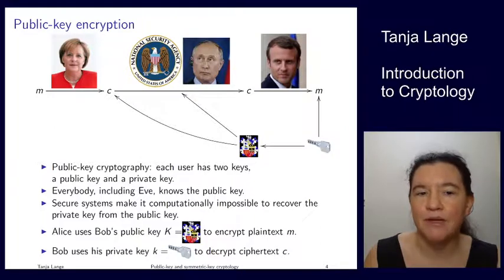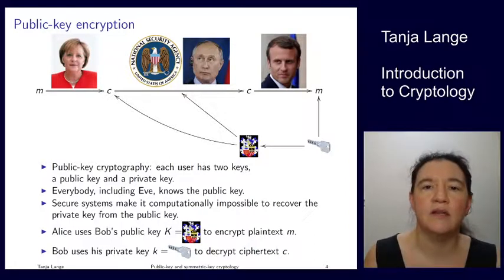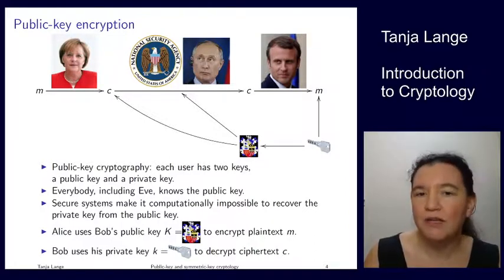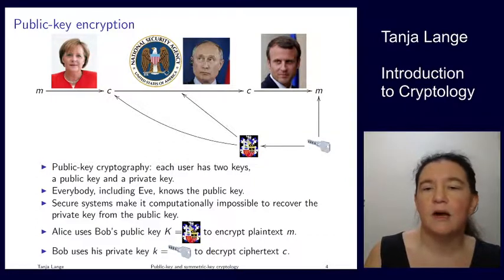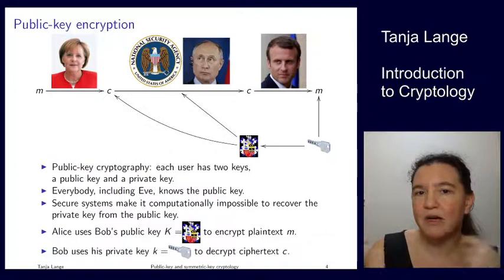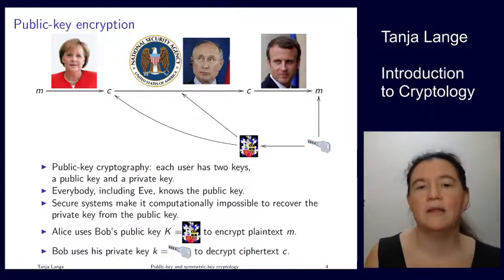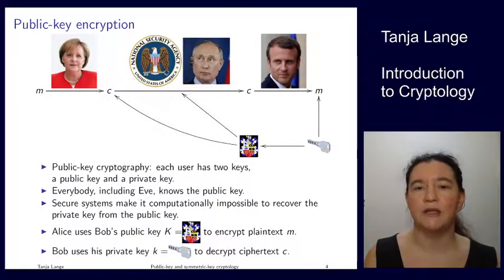That's a different paradigm. This is something which was only invented in the 1970s, precisely in 1976. Diffie-Hellman said, wouldn't it be great if we could do something with mathematical functions such that we don't have every pair of people who want to securely communicate needing to meet? In public key cryptography, each user has two keys.